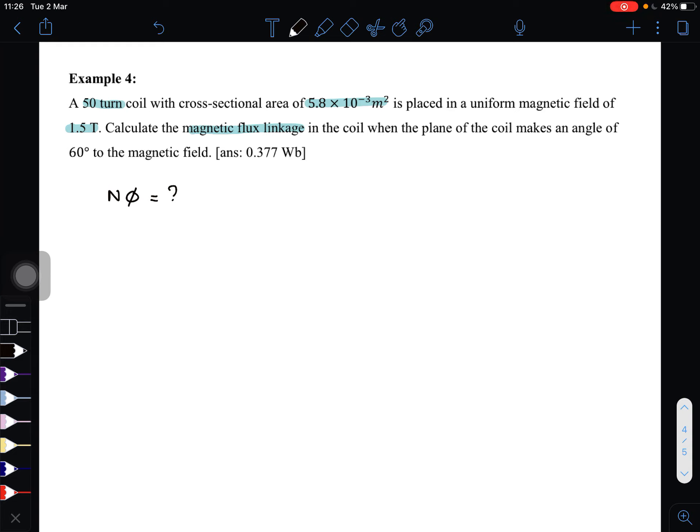And then another information here: when the plane of the coil makes an angle of 60° to the magnetic field. So again, let's draw first so that you can imagine the plane. The plane is 60° to the magnetic field.